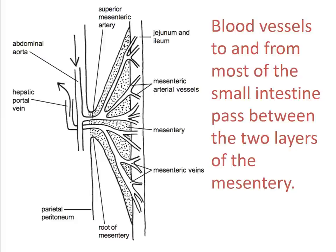The mesentery is fan-shaped, starting with a 15-centimetre length connecting the whole structure to the posterior abdominal wall — called the root of the mesentery. By the time the same double sheet of mesentery reaches the small intestine, it is six metres long, fanning out very quickly. Despite this length, the height is only 20 centimetres at the centre and much less toward the edges.